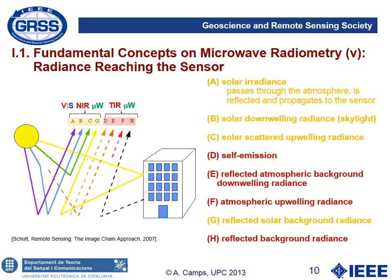Now let's talk about how much radiance reaches the sensor. We have the sun as a source of illumination: in the visible part of the spectrum, sunlight reaches the surface and then goes up to reach the sensor. We also have radiation that scatters in the atmosphere, reaches the earth's surface, and finally reaches the sensor. We may also have radiation scattered in the atmosphere that bounces up and reaches the sensor directly — for example, when we see clouds in images from Meteosat or GOES — as well as radiation from the sun that heats objects and, after multiple scattering, ends up reaching the sensor.